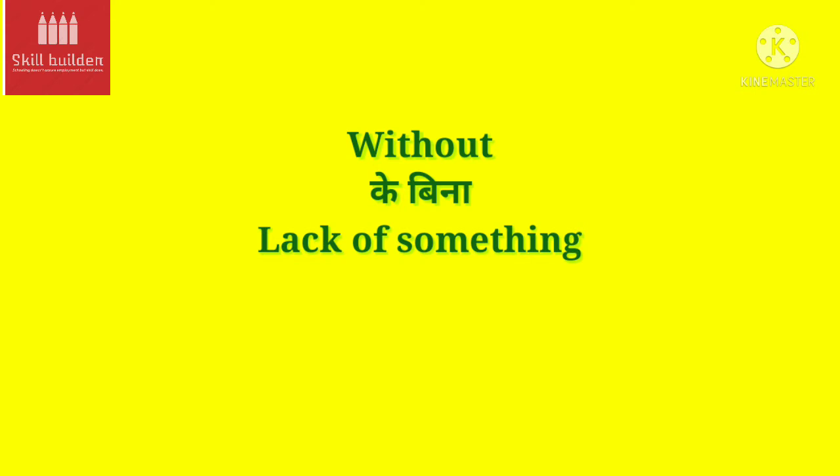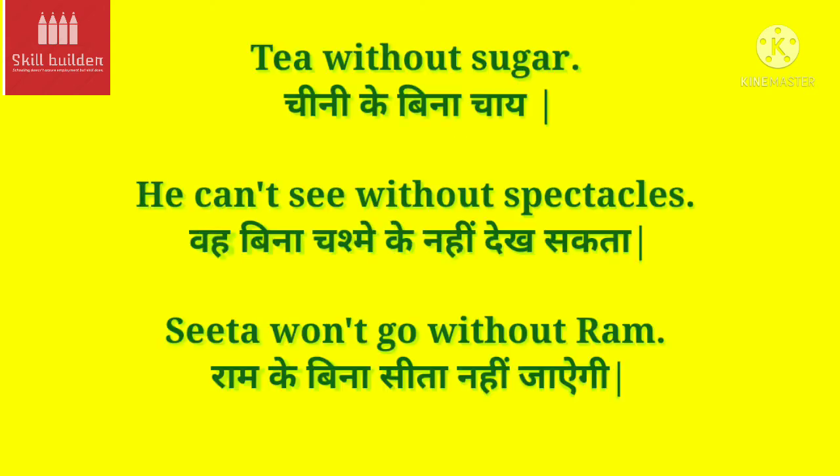Hello students, welcome back to English class of online learning with Skill Build. This is the second class of prepositions and in this class today we are going to learn about two prepositions. The first one is 'without' and its meaning is 'ke bina', or we can say 'lack of something'. Let's take some examples.